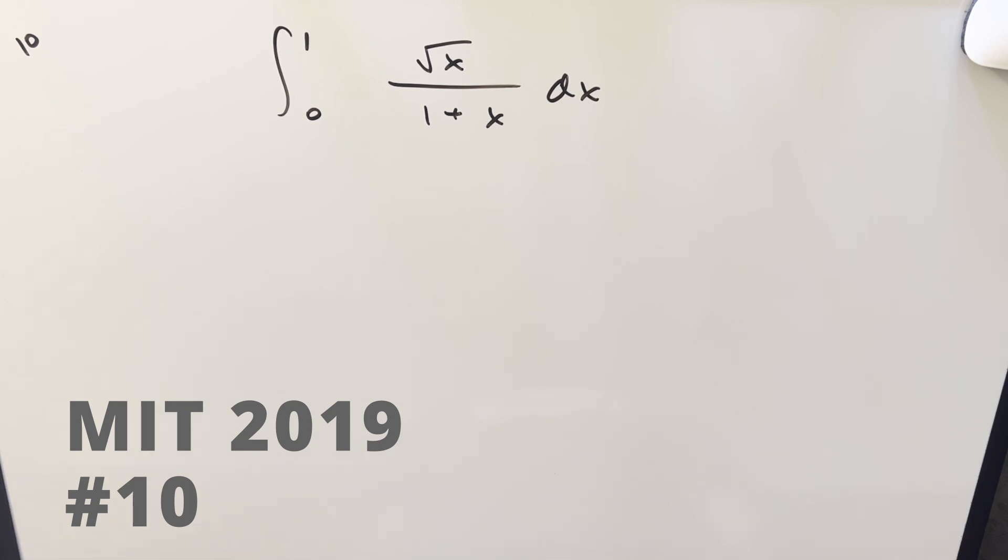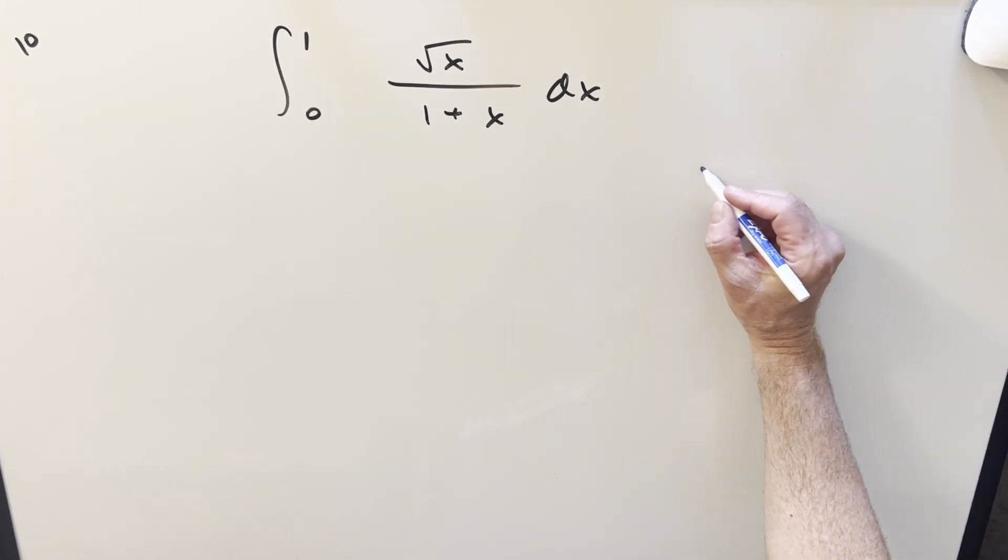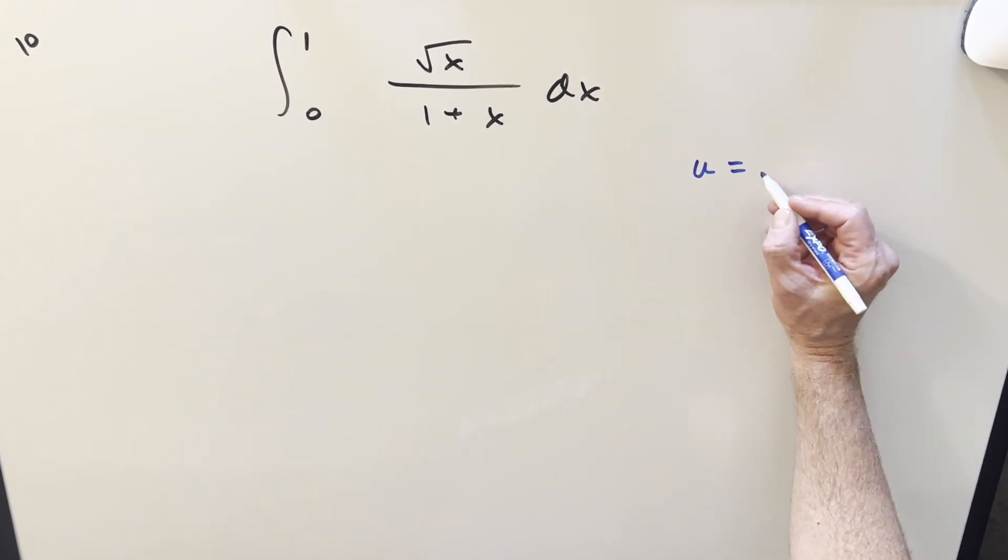We have the integral from 0 to 1 of square root of x over 1 plus x dx. Okay, for this one, I actually have two methods I want to try on it. The first one is going to be the more straightforward. The second one's a little different.